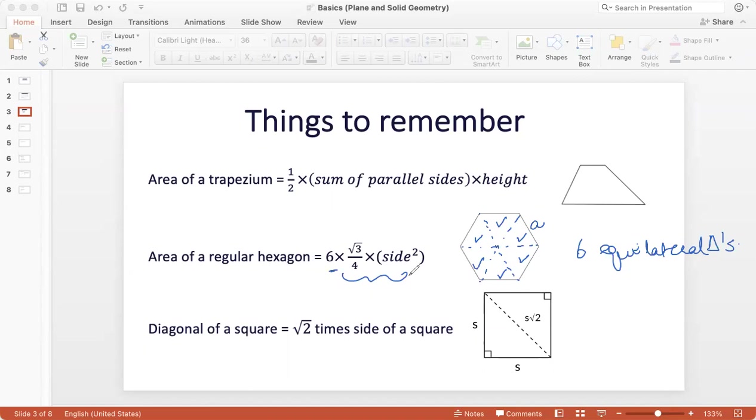And one more important concept that if you have a square, then the diagonal of the square will be the hypotenuse of the right triangle with the basis being S and S. It's an isosceles right triangle. And so the diagonal by Pythagorean theorem would be S root 2. Let's now do some sample problems.